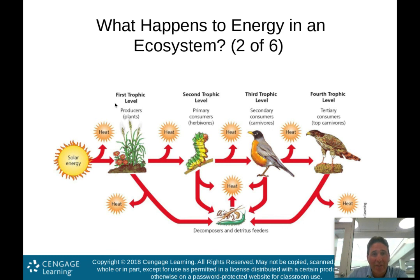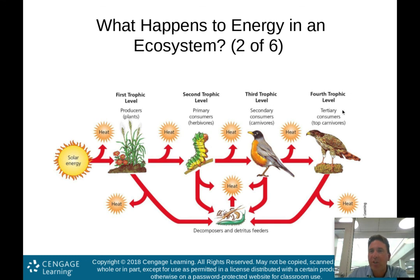Here we have the first trophic level — producers. The second trophic level are primary consumers — herbivores. The third trophic level are secondary consumers — carnivores. And the fourth trophic level are tertiary consumers, or top carnivores.